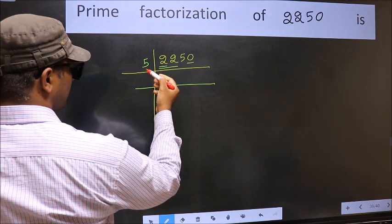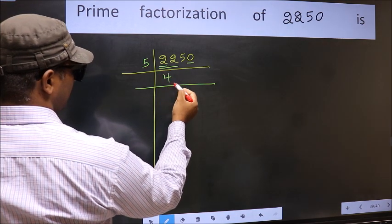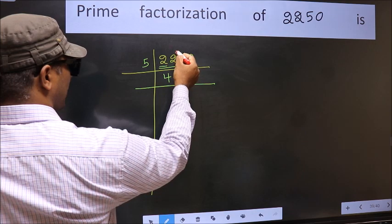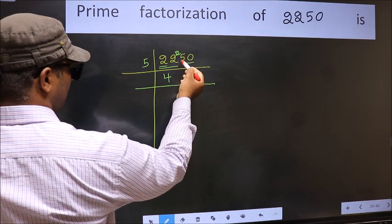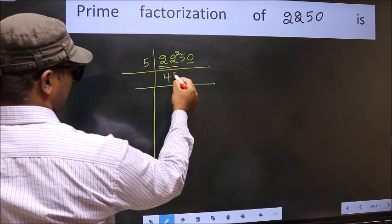A number close to 22 in 5 table is 5 fours 20. 22 minus 22, 2 carried forward 25. When do we get 25 in 5 table? 5 fives is 25.